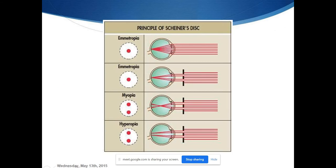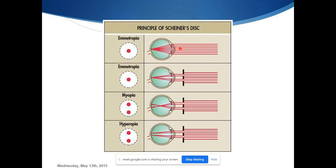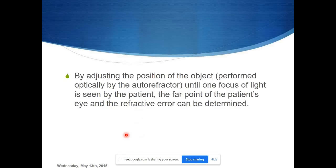This diagram gives a better explanation. In a normal emmetropic eye without a pinhole, a clear image is formed. With the double pinhole, both images pass through and form a single focused image. In a myopic patient, the two images separate and cross over. In a hyperopic patient, a different pattern is formed. This is the basic principle on which most existing autorefractometers work.